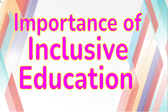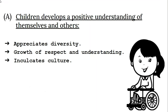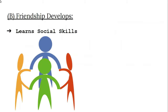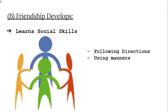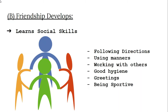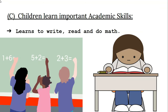The first importance of inclusive education is that children develop a positive understanding of themselves and others, appreciating diversity, growth of respect, and inculcating a culture of understanding. The second importance is it develops friendship among children. Through inclusive education, children learn social skills such as following directions, using manners, working with others, greetings, being sportive, and listening to others.